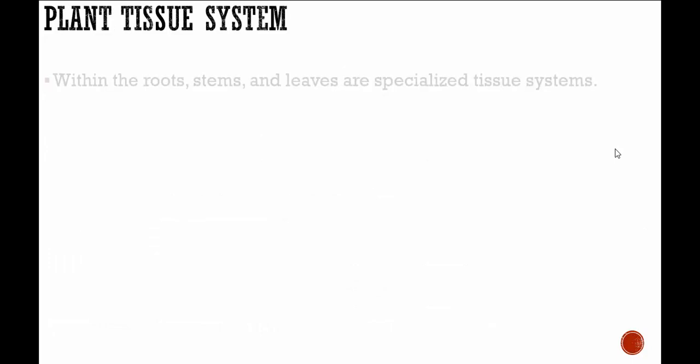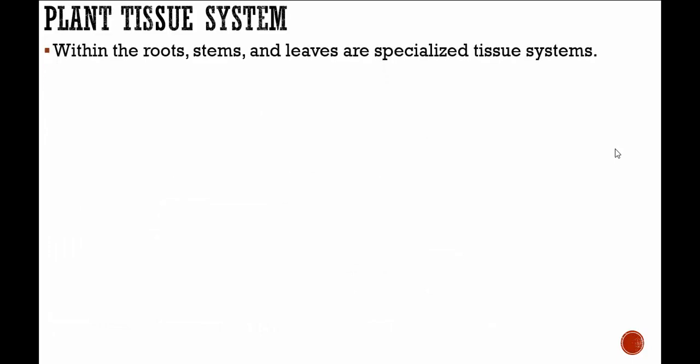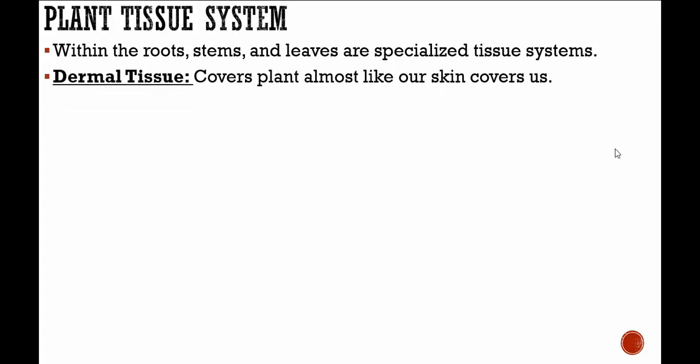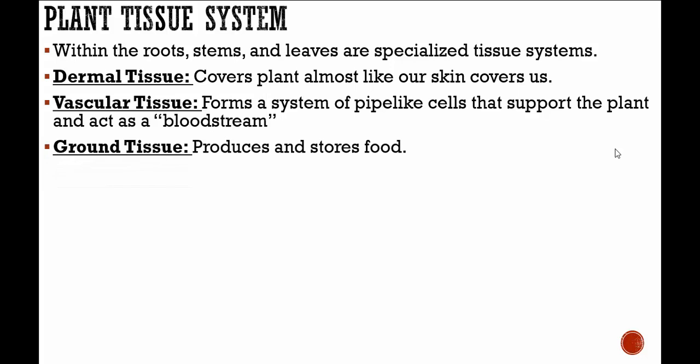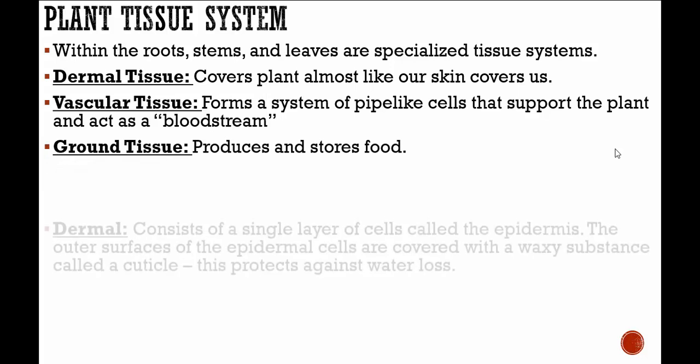Within the roots, stems, and leaves are specialized tissue systems. We have dermal tissue, which covers the plant almost like our skin covers us. We have vascular tissue, which forms a system of pipe-like cells that support the plant and act as a bloodstream — instead of transferring blood, it transfers water and nutrients. And ground tissue, which produces and stores food.